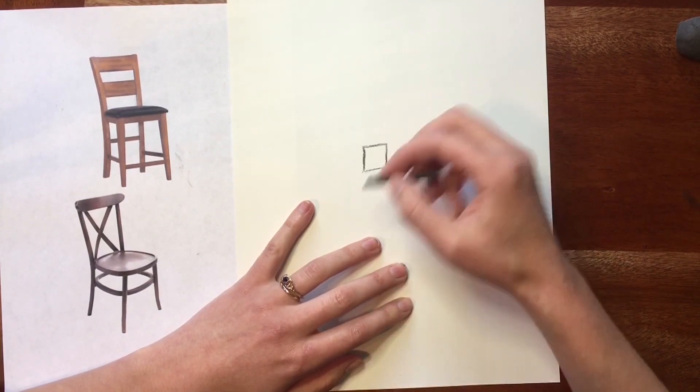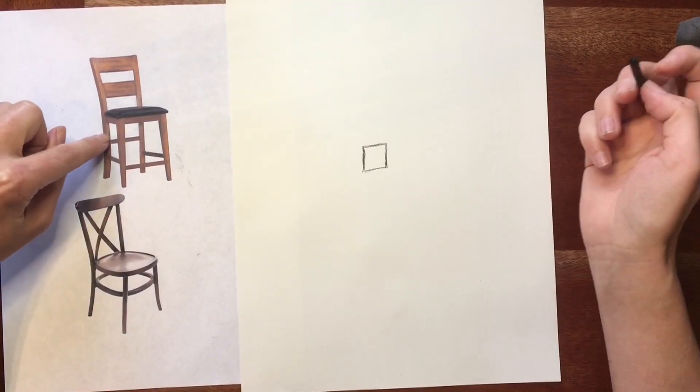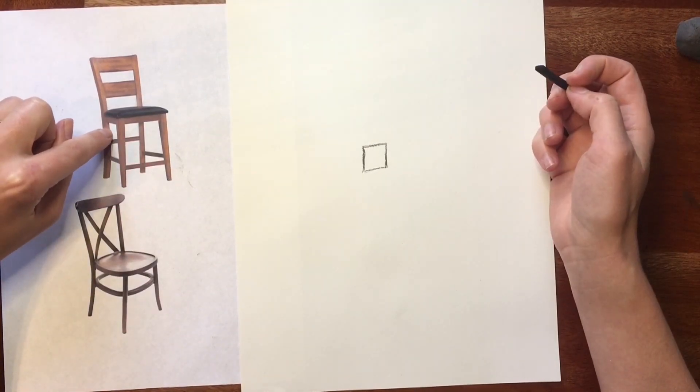So our first shape is in place. Now, all we have to do is choose an adjacent shape and move on. So I'm going to be doing this shape right in here next.